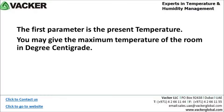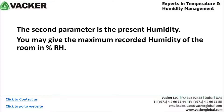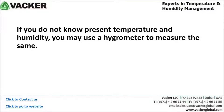The second parameter is the present humidity. You may give the maximum recorded humidity of the room in percent RH. If you do not know the present temperature and humidity, you may use a hygrometer to measure the same.